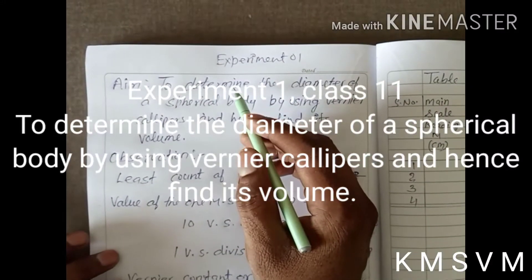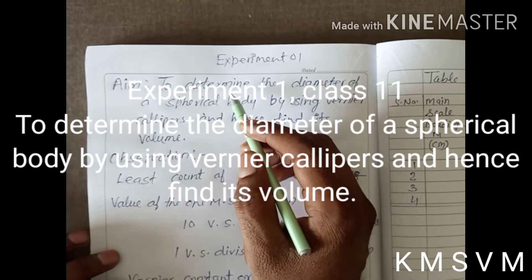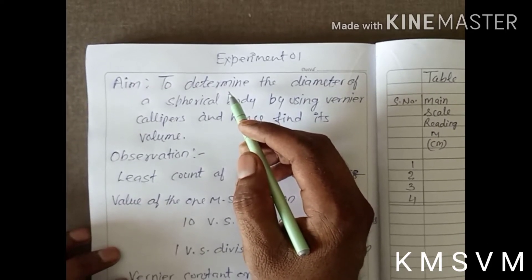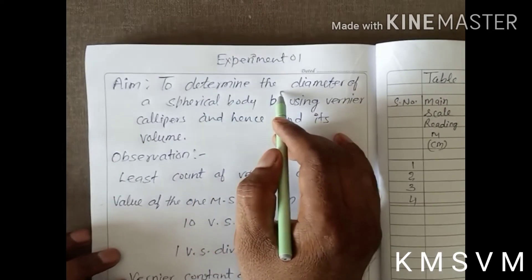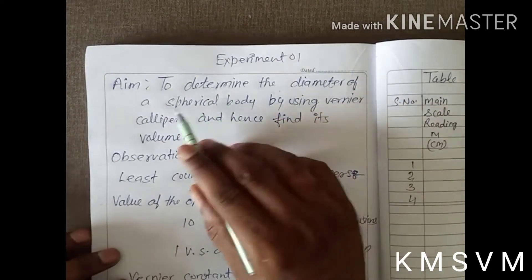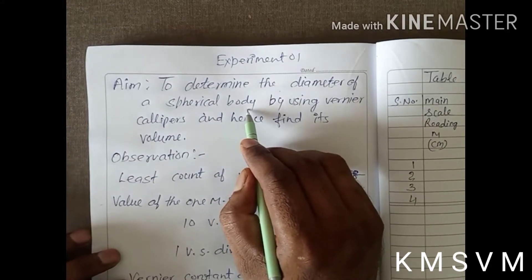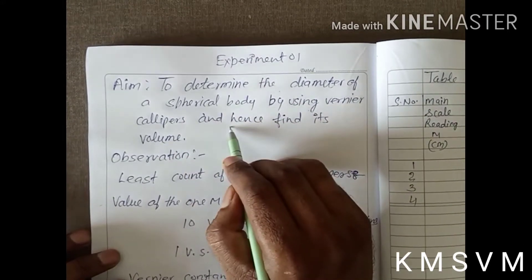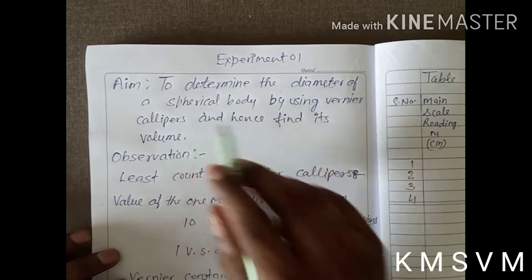Hello students. Today we will do an experiment to determine the diameter of a spherical body by using vernier calipers and hence find its volume.